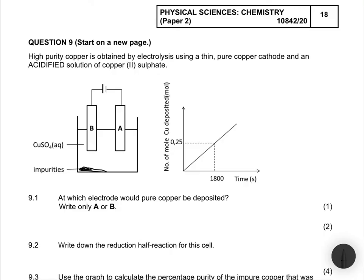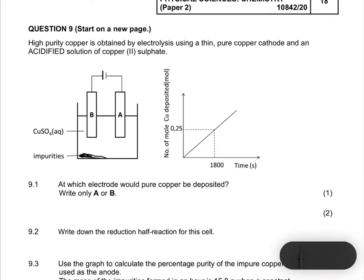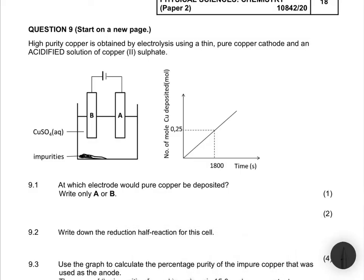Back to basics: in electrolysis we have two electrodes connected to a power source. This will be the positive terminal and this the negative terminal. In an electrolytic cell, the anode is connected to the positive terminal, so electrode B is our anode and consequently electrode A is our cathode.